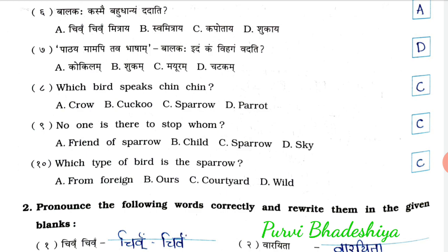9th, no one is there to stop whom? — Answer is C, Sparrow. 10th, which type of bird is the sparrow? — Answer is C, Courtyard.